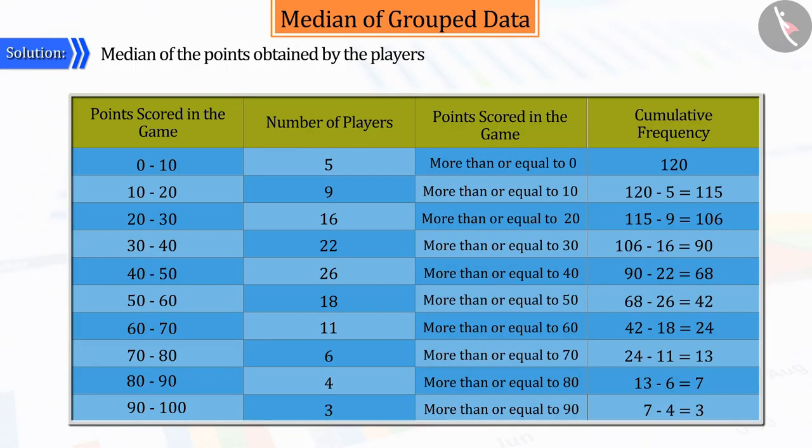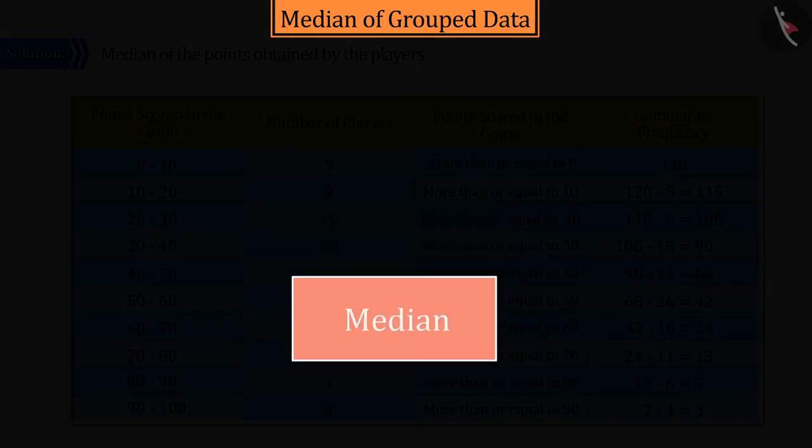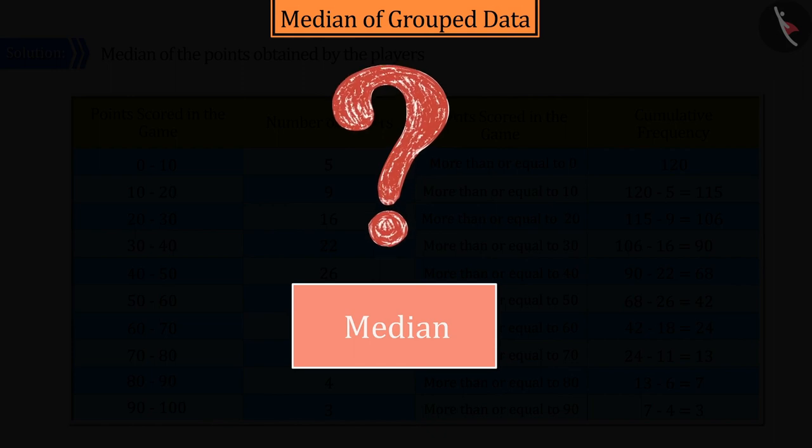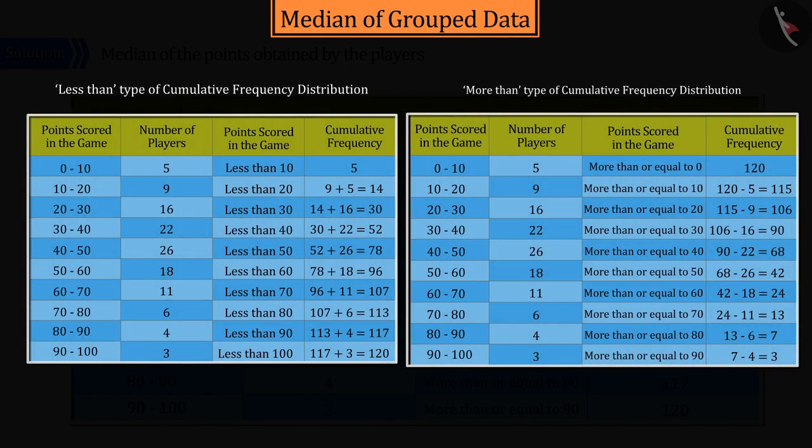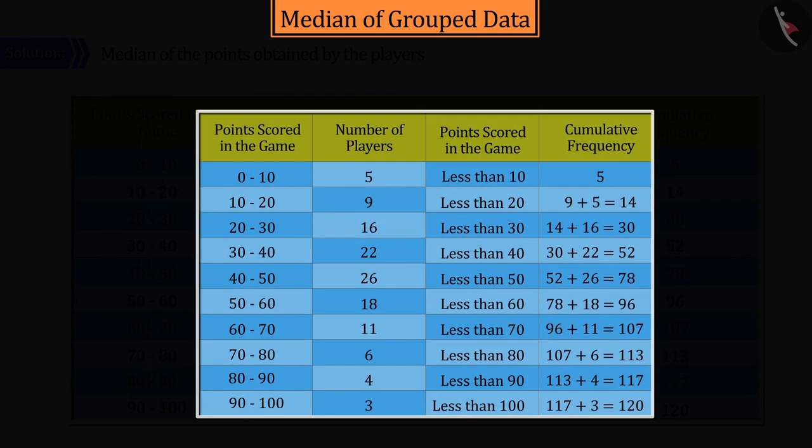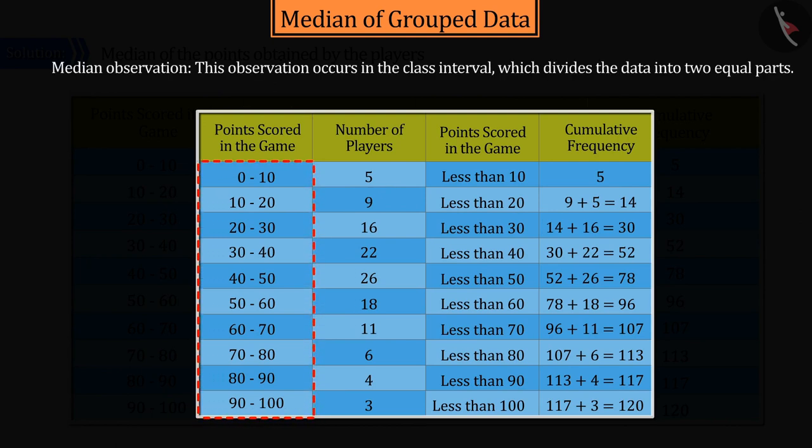Since we have to find the median of the given data, so can you tell what we need to do for this? Absolutely correct. Use either of the above cumulative frequency distributions to find the median. Here, let's select the less than type of distribution, with the help of which we will find the observation that is at the centre of the grouped data, which divides the data into two equal parts.